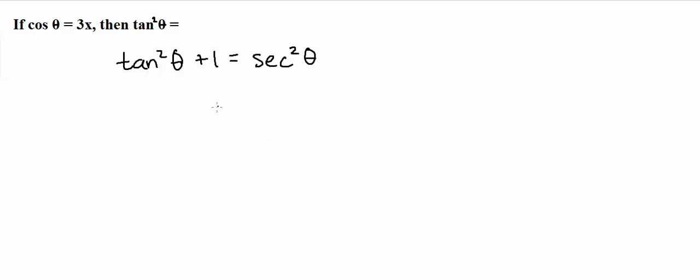And if you remember the relationship between secant and cosine, the secant of theta is equal to 1 over cosine of theta. So now using these two pieces of information, we can solve for tangent squared theta.